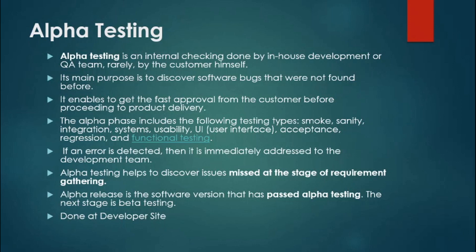A common interview question is about the difference between alpha, beta, and gamma testing. Most of the time you have to mention the site or location where each type of testing is done. Alpha testing is done at the developer site, and beta testing is generally done at the client site.